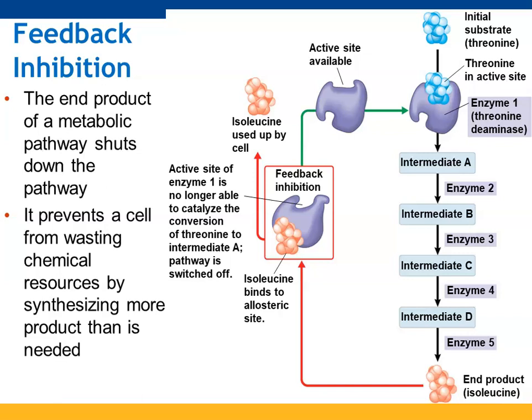Finally, feedback inhibition is when cells use the product of a metabolic pathway to shut down that particular pathway. When the cell reaches sufficient amounts of the desired product, it may no longer need to make more. In this example, threonine is turned into isoleucine through multiple steps. Isoleucine is able to bind allosterically to the enzyme at the very first step, changing the active site shape and preventing threonine from being transitioned into the intermediates. When the cell uses up that isoleucine and needs to make more, the isoleucine bound to the allosteric site comes off, the active site becomes available again, and threonine can be broken down into isoleucine once more.